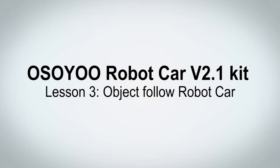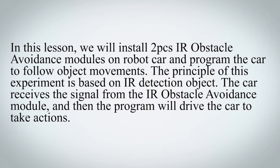OSIO Robot Car V2.1 Kit, Lesson 3: Object Follow Robot Car. In this lesson, we will install two IR obstacle avoidance modules on the robot car and program the car to follow object movements. The principle of this experiment is based on IR detection. The car receives the signal from the IR obstacle avoidance module, and then the program will drive the car to take actions.